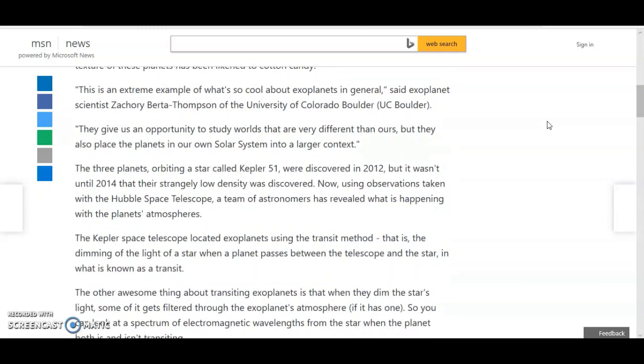The three planets orbiting a star called Kepler 51 were discovered in 2012, but it wasn't until 2014 that their strangely low density was discovered. Okay, so it took two years to discover that strangely low density, no problem.